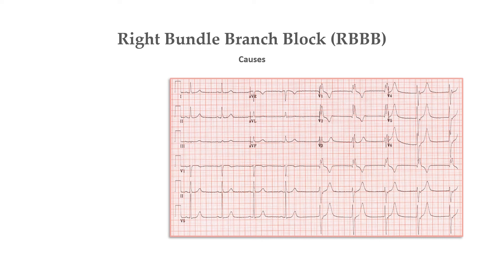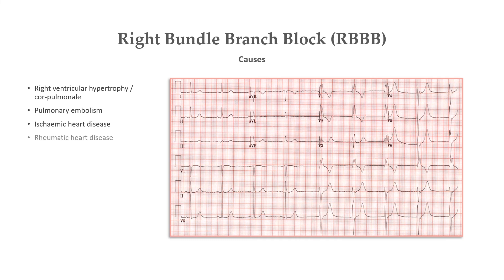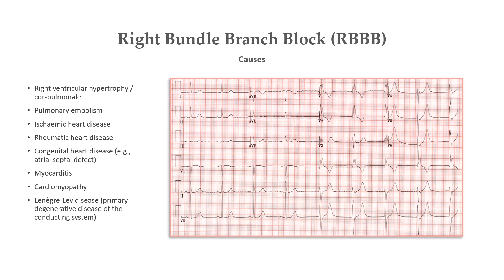Conditions leading to right bundle branch block include right ventricular hypertrophy, cor pulmonale, pulmonary embolism, ischemic heart disease, rheumatic heart disease, congenital heart disease (for example, atrial septal defect), myocarditis, cardiomyopathy, and Lenegre-Lev disease, which is a primary degenerative disease of the conducting system.